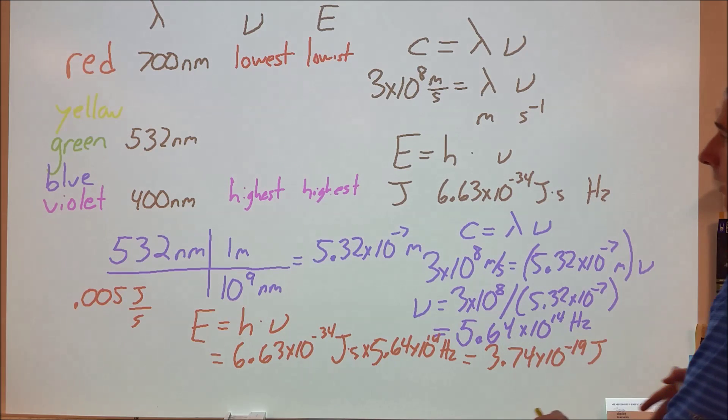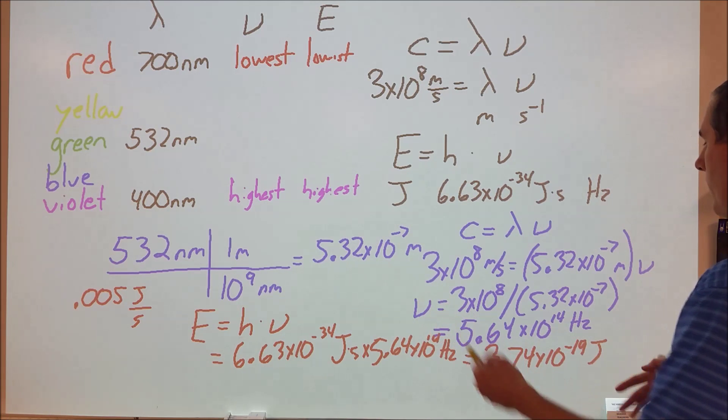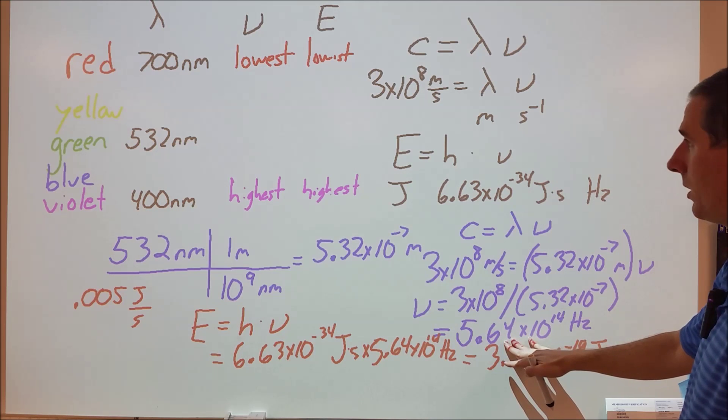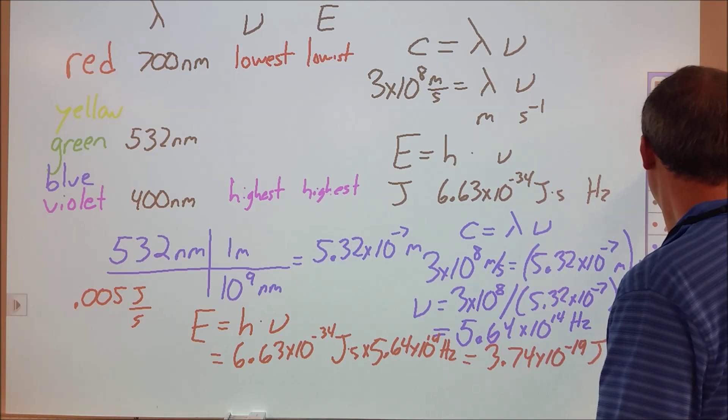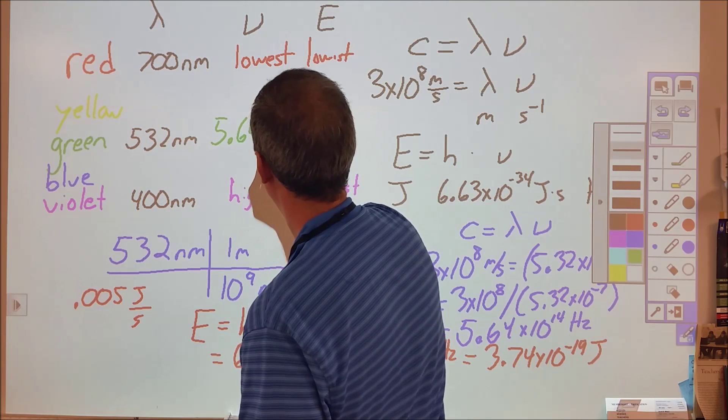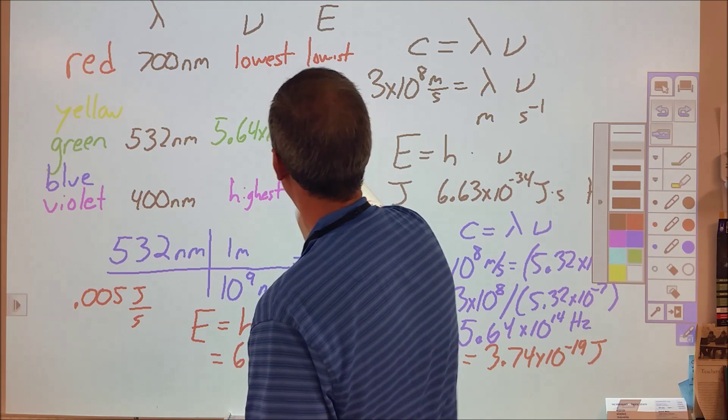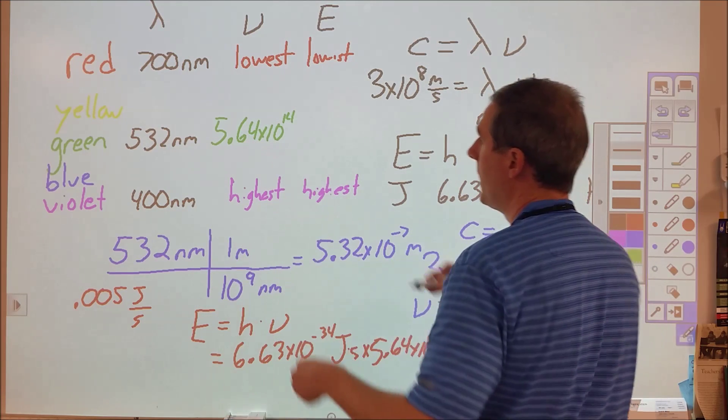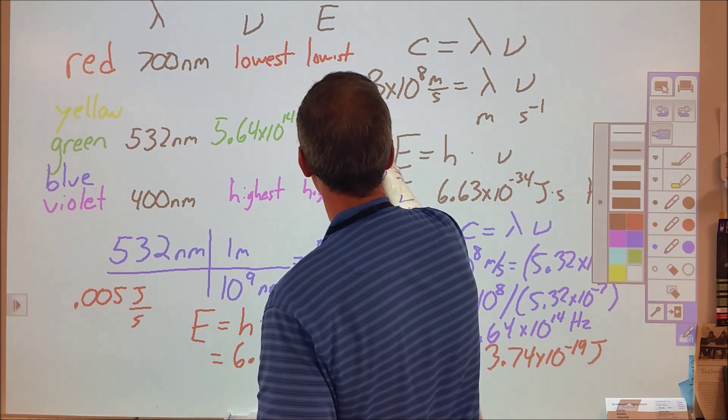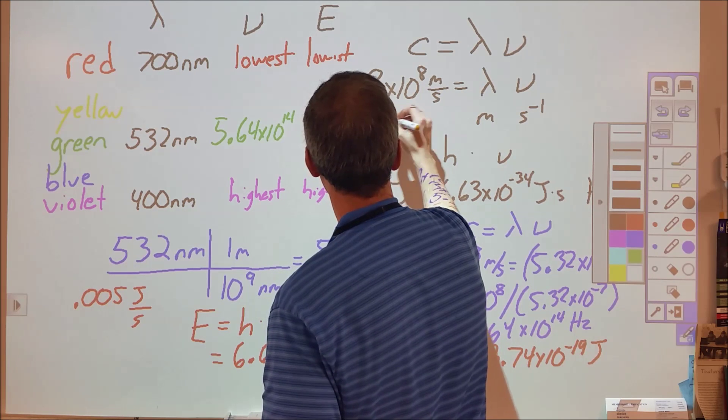We can go ahead and plug in our numbers here. For green, we now have our frequency of this particular green light is 5.64 times 10 to the 14th hertz. We know that the frequency of red light is going to be lower than that, and then we know our energy, 3.74 times 10 to the negative 19th joules.